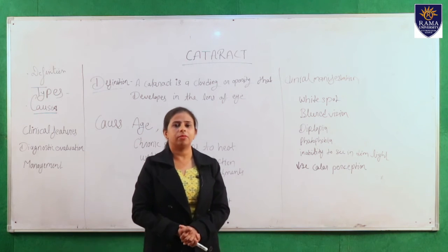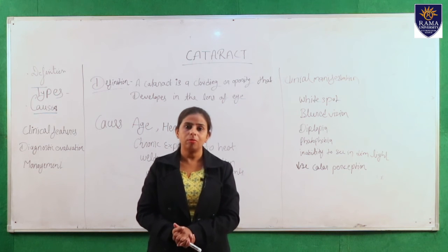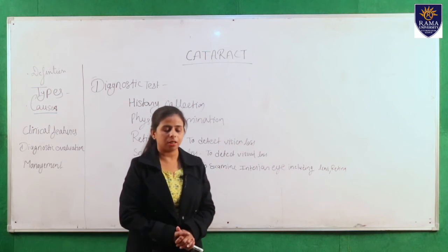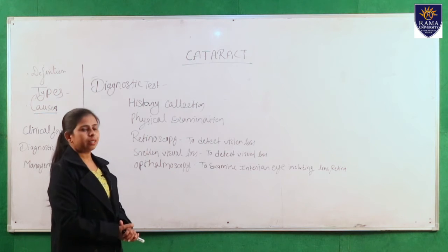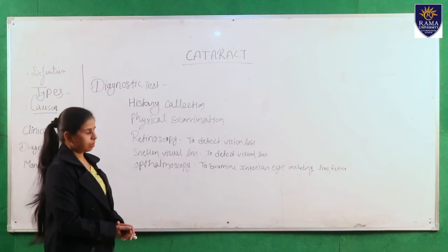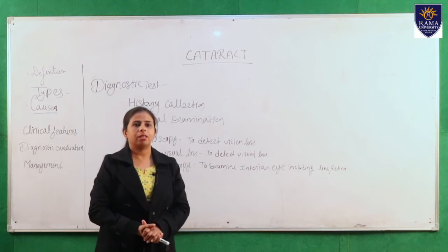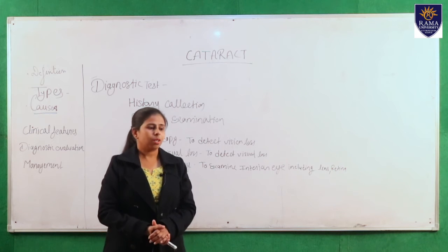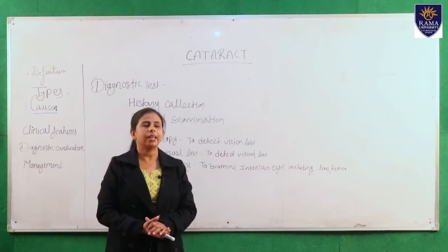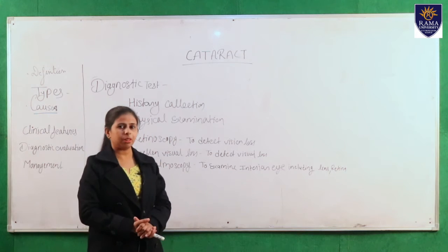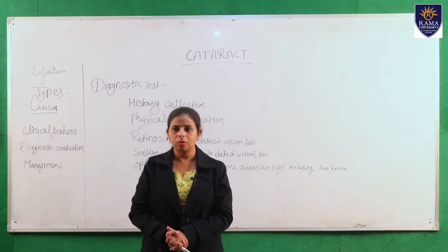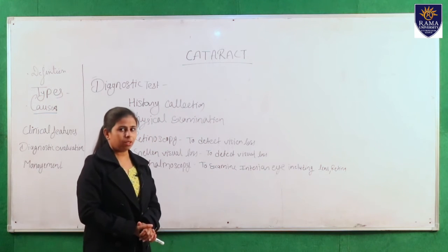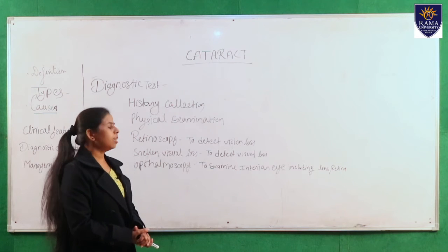Next is diagnostic evaluation. Many diagnostic tools are used to diagnose cataract. First is history collection — we collect present history and past history to diagnose cataract. Next is physical examination, through which we can also find cataract. Next is retinoscopy — through retinoscopy, we detect vision loss.